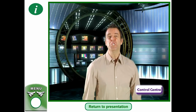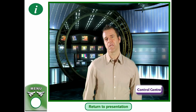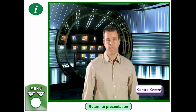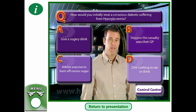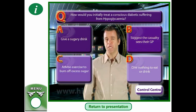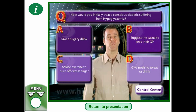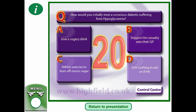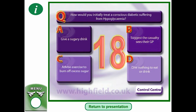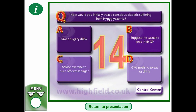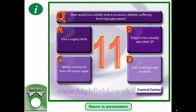Final question: how would you initially treat a conscious diabetic suffering from hypoglycemia? A — give a sugary drink, B — suggest the casualty see their GP, C — advise exercise to burn off excess sugar, or D — give nothing to eat or drink? Remember, hypoglycemia is lack of sugar, so the answer is A — give a sugary drink.